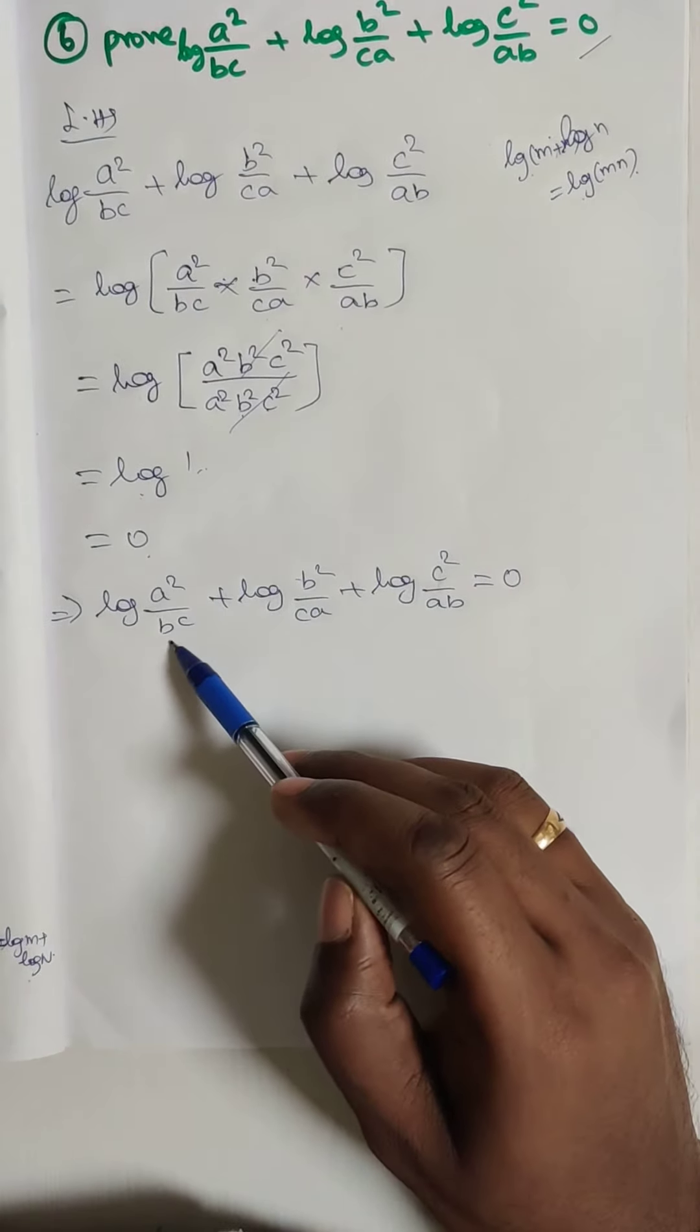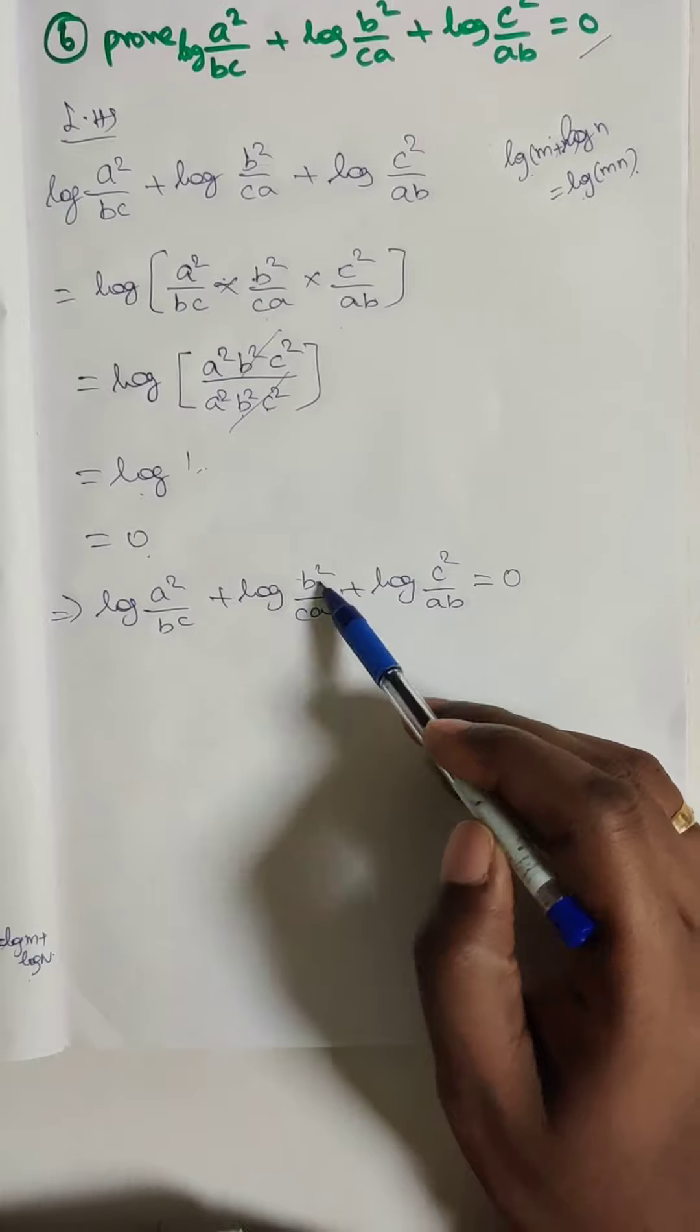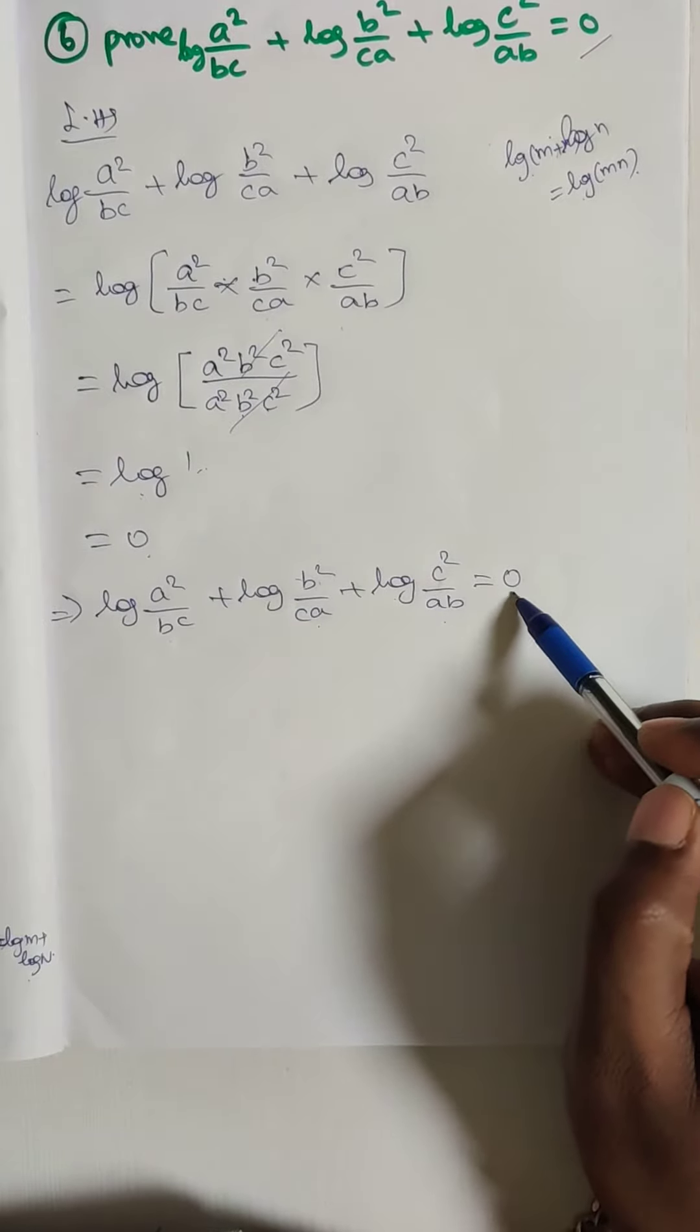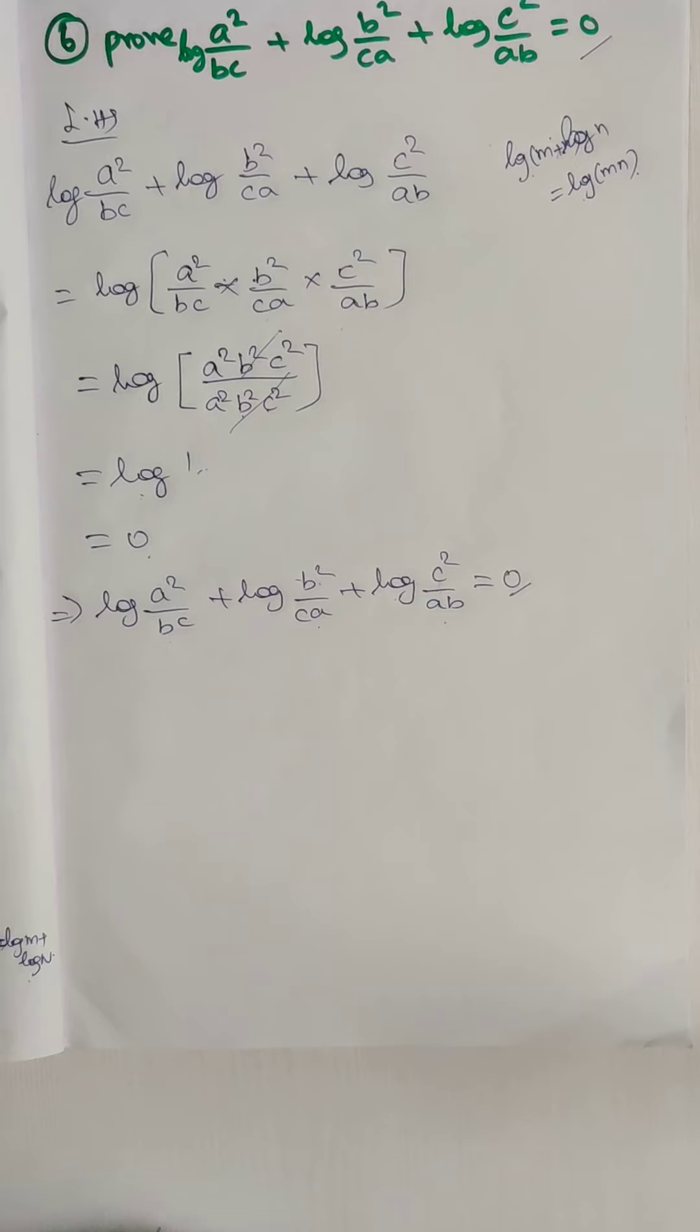Clear? So log a square by bc plus log b square by ca plus log c square by ab is equal to what? Zero. So this is the answer for this sum. Clear? Okay children, thank you.